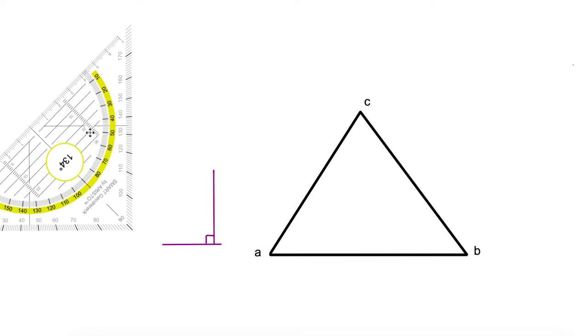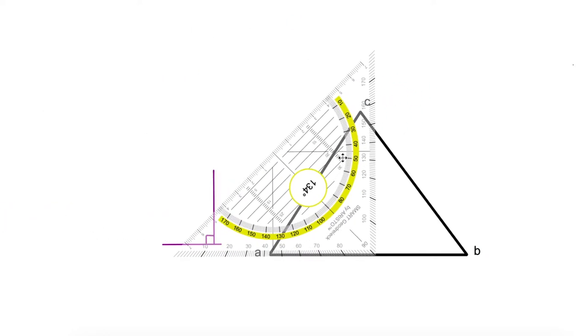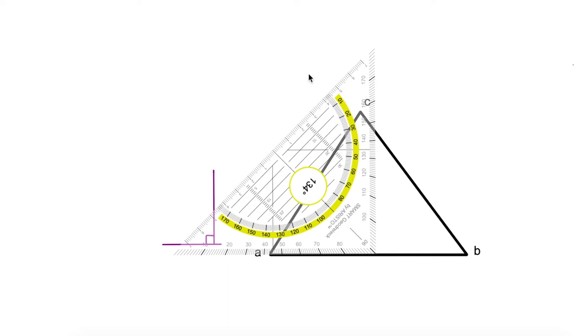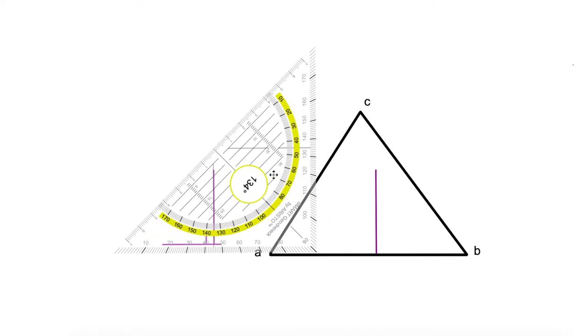So I'm going to start with segment AB. I have to draw a perpendicular line of this segment. I can draw one here using my square ruler, but this is not the right one. Why? Because this line is not getting to the opposite vertex, which is C.